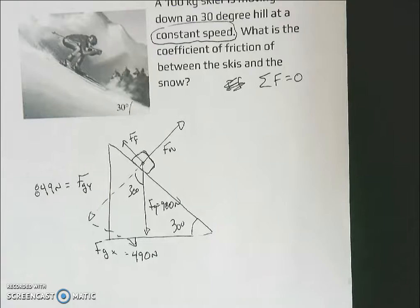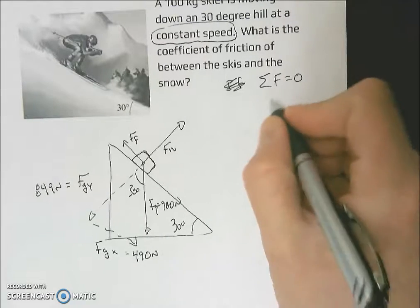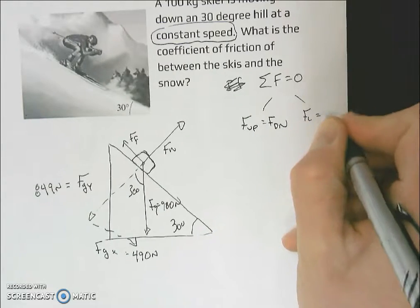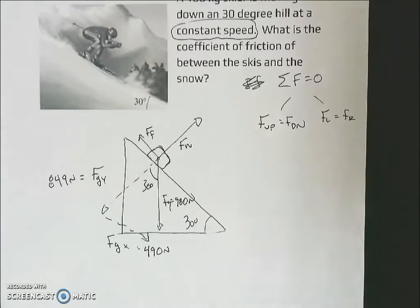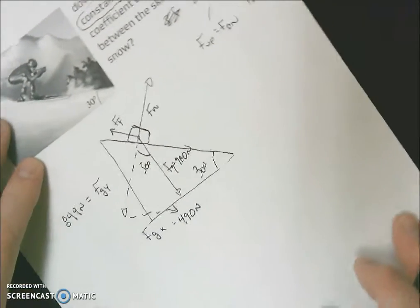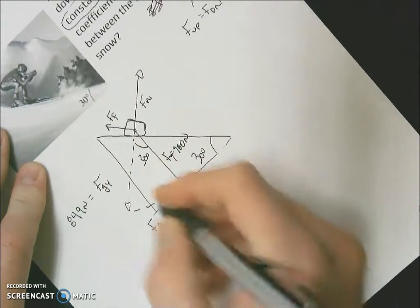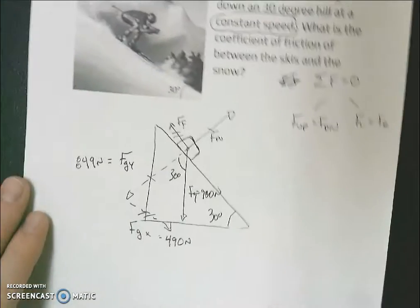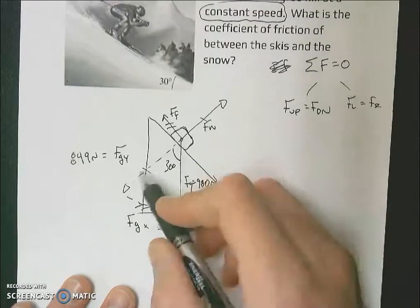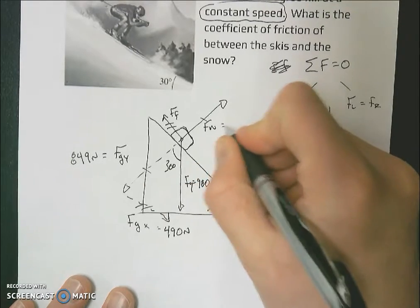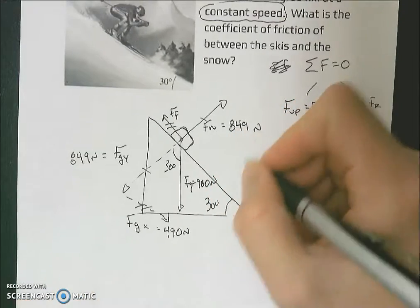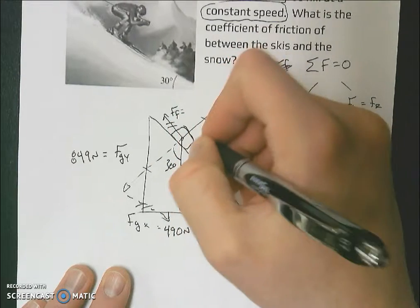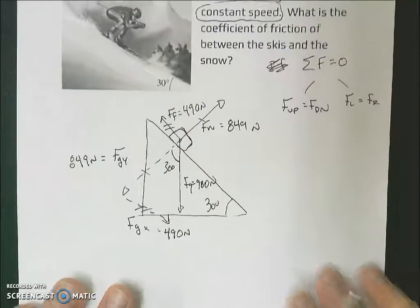Constant speed tells us a couple things. It tells us that our sum of all our forces are zero. We know that means our forces up will equal our forces down. And that also means our forces left will equal our forces right. If we're thinking up, down, left, right, I'm going to turn it so it's like that. That means this and this are going to be equal, and this and this are going to be equal. If my force of gravity in the y was 849, so is my normal force, 849. If my force of gravity in the x is 490, if I'm going at a constant speed, the force opposing that motion, keeping me at constant speed, is also going to be 490 newtons.